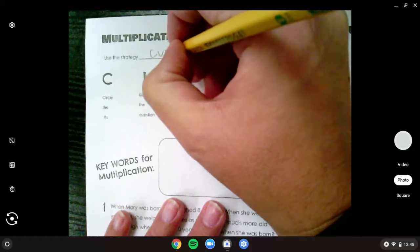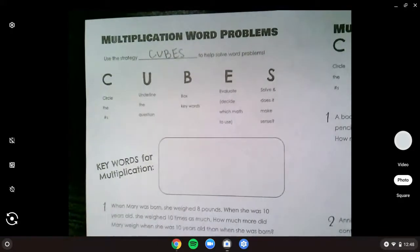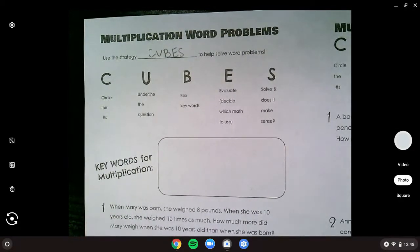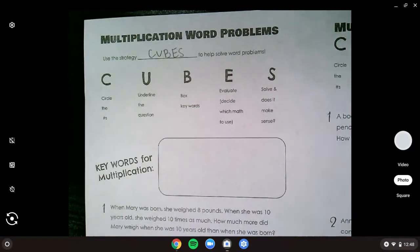This strategy is called the cubes strategy. Go ahead and write the word cubes on that blank line. I don't mean like an ice cube. I mean the word cube where we stretch it out and each letter stands for something. Let's call it an acronym.